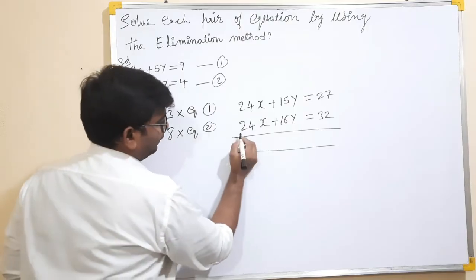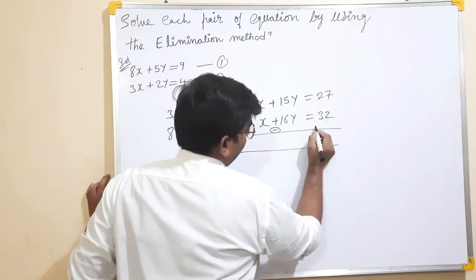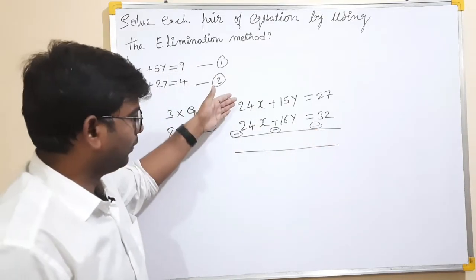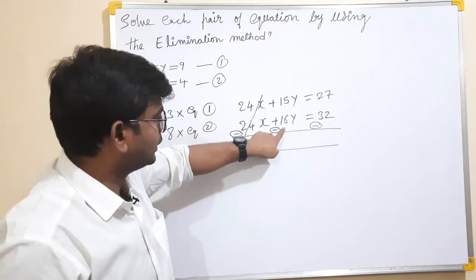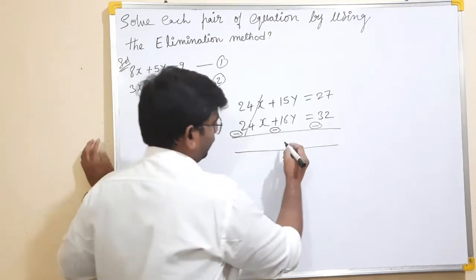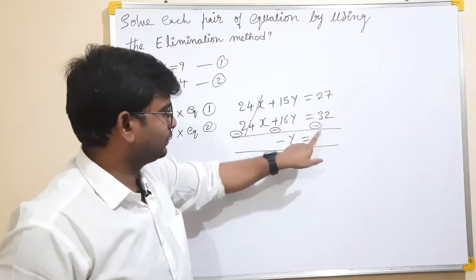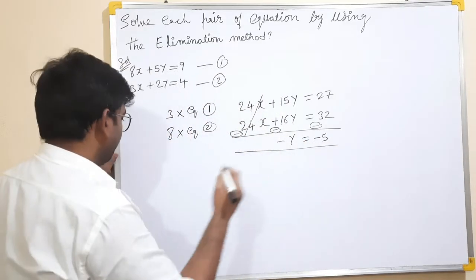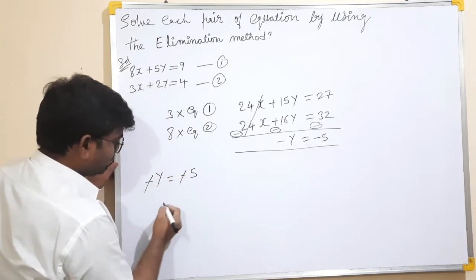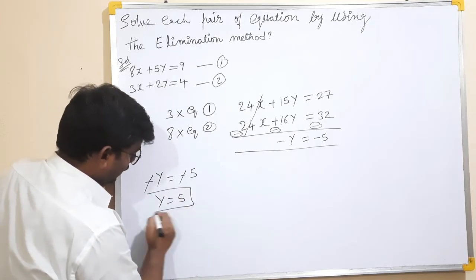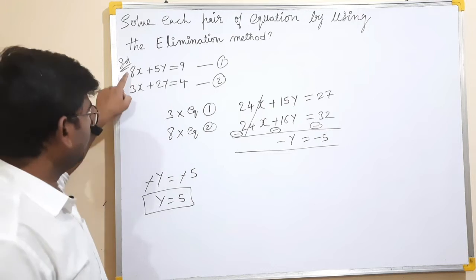Now we subtract equation 1 from equation 2. The plus and minus signs are applied. The 24x terms cancel out. We are left with minus y equals 32 minus 27, which gives minus y equals 5. So y equals minus 5. The minus values cancel, and y equals 5.